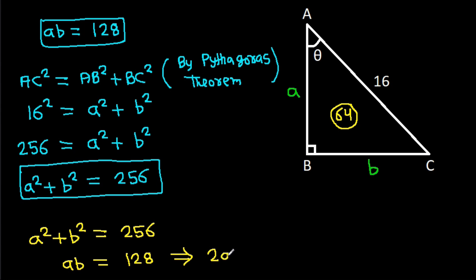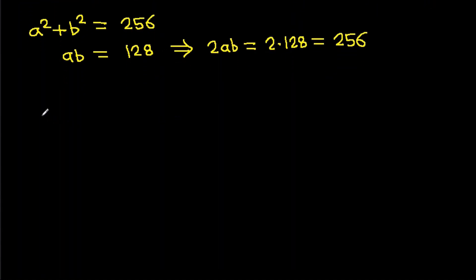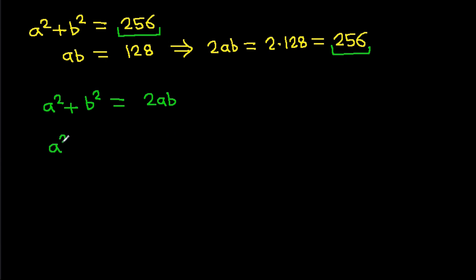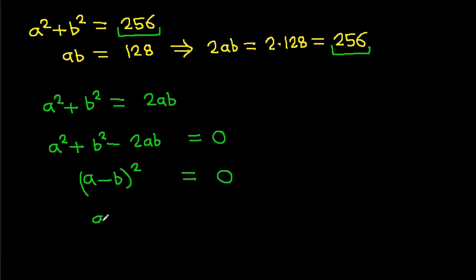From here, 2AB equals 2 times 128, which equals 256. Since A squared plus B squared equals 256 and 2AB also equals 256, we get A squared plus B squared minus 2AB equals 0. This means A minus B squared equals 0, so A minus B equals 0, meaning A equals B.